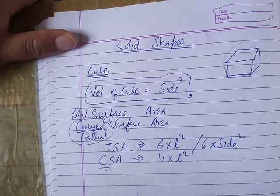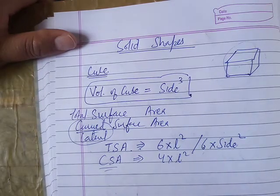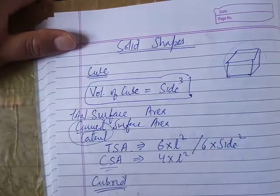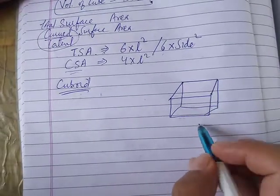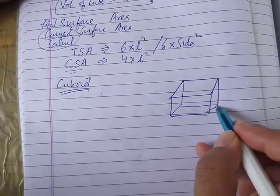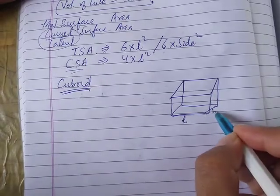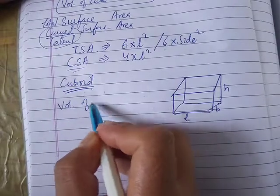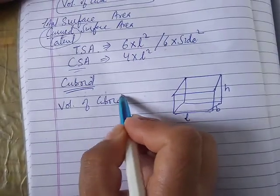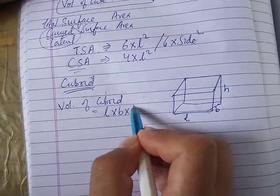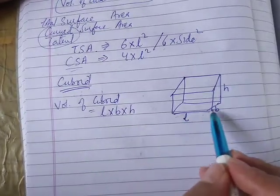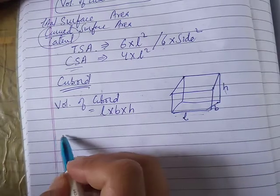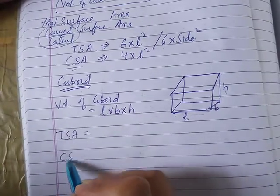Now the next one is cuboid. The cuboid means length, breadth and height. Volume of cuboid is length times breadth times height. There is total surface area and curved surface area.